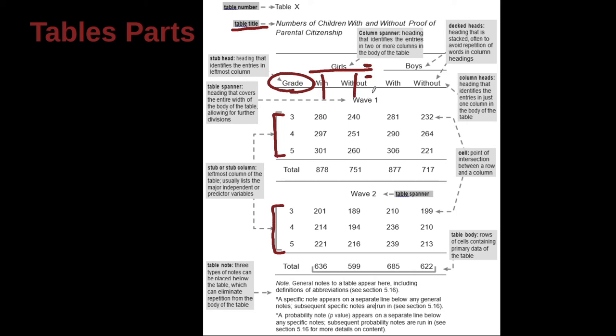And then down here, we have this overall spanner. It's called a table spanner because it's actually going across the whole table. It's the title of going all the way across. It represents all those columns. So all these columns here are wave 1. All these columns here are wave 2. But each of the columns is different information because some are girls, some are boys, some are with, some are without, and then there are different grades too, right?